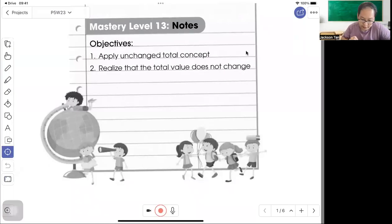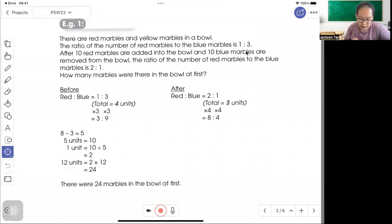Welcome to P5 work problem. The objective is to apply unchanged total concept and realize that the total value does not change. There are red marbles and yellow marbles in a bowl. The ratio of the number of red marbles to the blue marbles is 1 to 3.